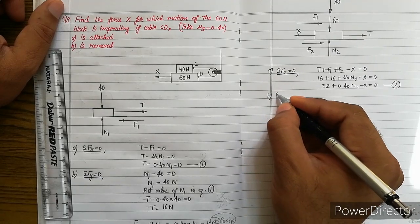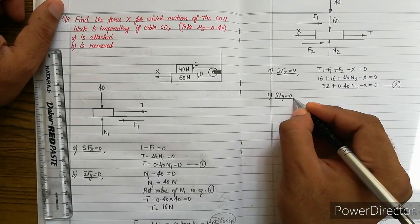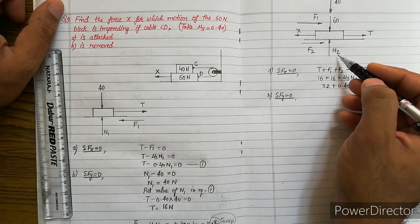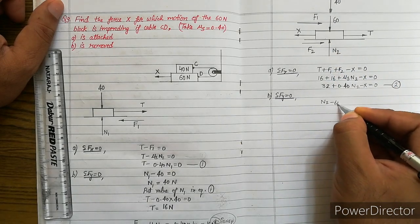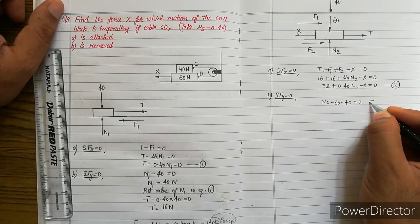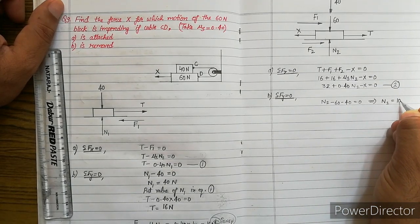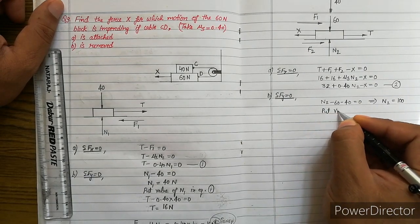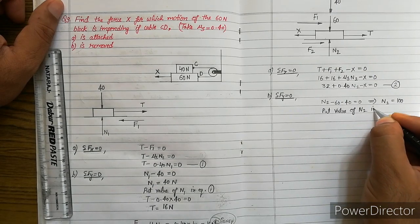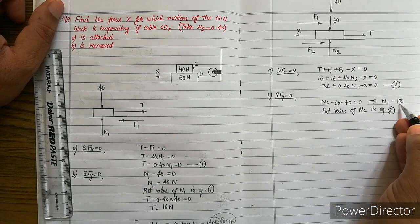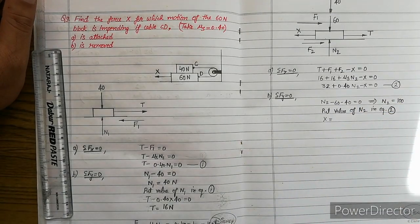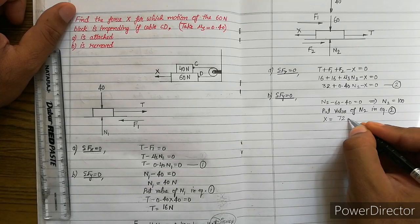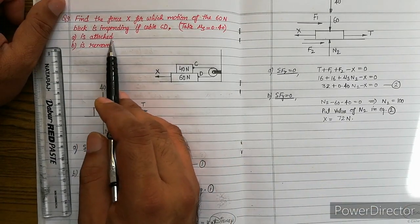Applying summation Fy = 0: N2 (upward, positive) − 60 − 40 = 0, so N2 = 100N. Substituting N2 = 100 into Equation 2: 32 + 0.40 × 100 − X = 0, giving X = 32 + 40 = 72N. So the answer for part A, when the cable is attached, is X = 72N.